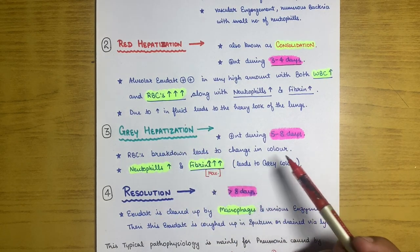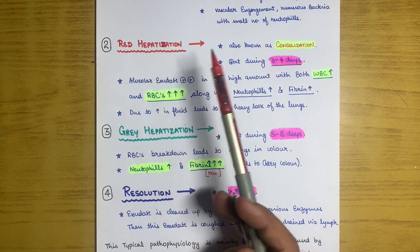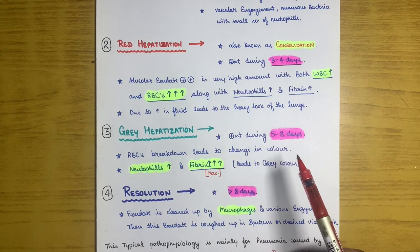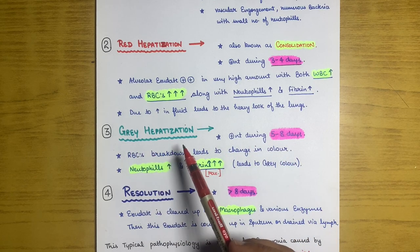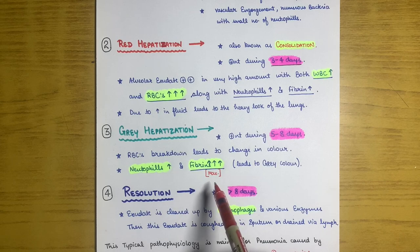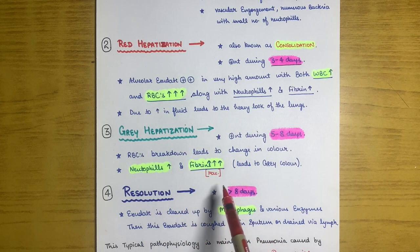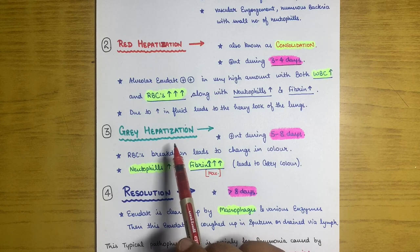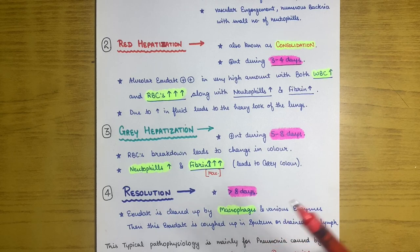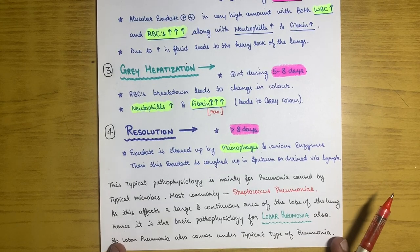The third stage is gray hepatization, present during days five to eight. The RBCs present in the red hepatization stage break down, leading to a change in color. Neutrophils remain increased but maximum fibrin is present in this stage. Important exam point: if asked in which stage maximum fibrin is present, the answer is gray hepatization.